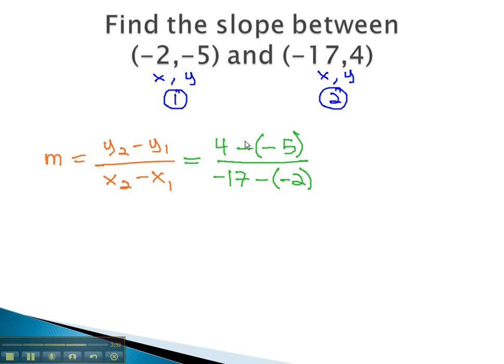By subtracting, or subtracting a negative becoming adding a positive, we can find our slope. 4 plus 5 is 9, over negative 17 plus 2 is negative 15. Reducing this fraction by dividing by 3 gives us 3 fifths, not forgetting the negative.